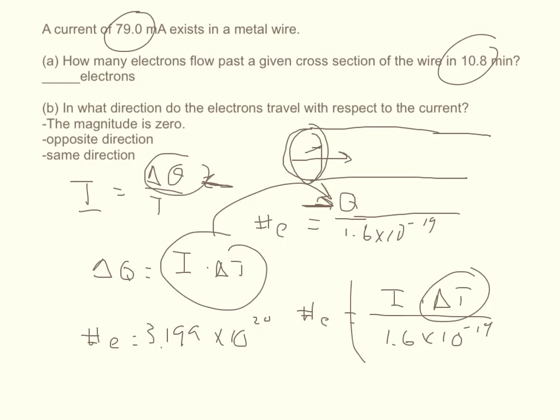Now the other thing is it asks for what direction the electrons are traveling with respect to the current. So electrons always travel against the direction of the current, and positive charges always travel with the direction of the current.